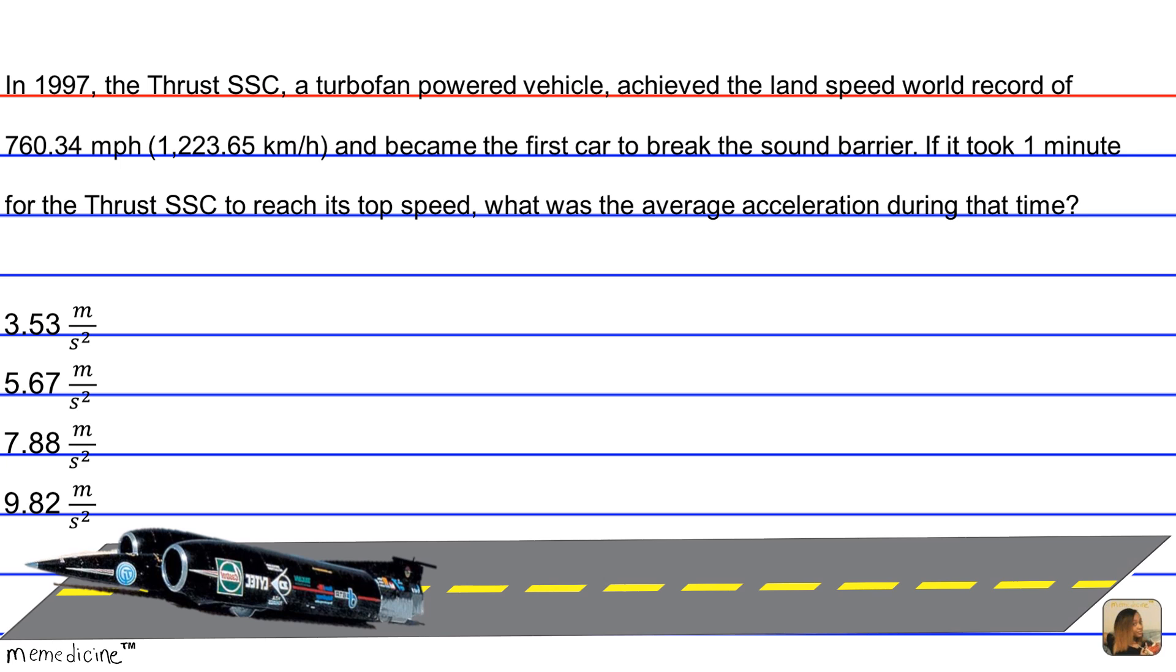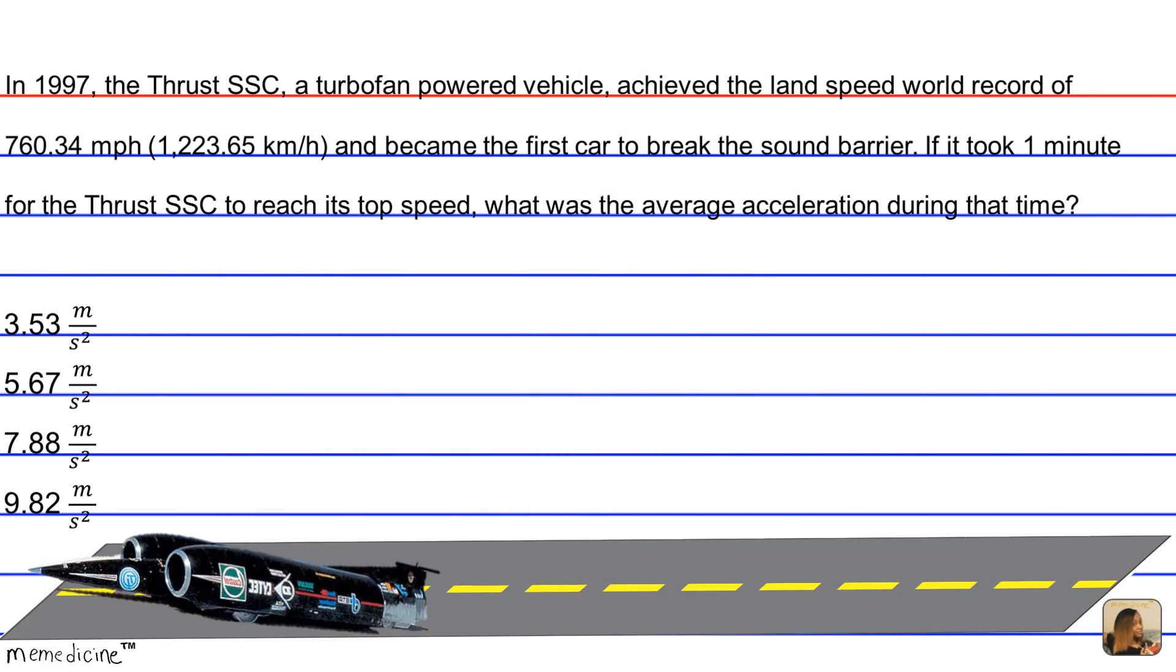All right. Okay, so hopefully by now you've arrived at an answer, and if you didn't, that's totally fine as well. We're given velocity and time, and we're asked to find the average acceleration. Therefore, we can use the kinematics formula a = v/t, where a stands for average acceleration, v is the velocity, and t is the time of travel.